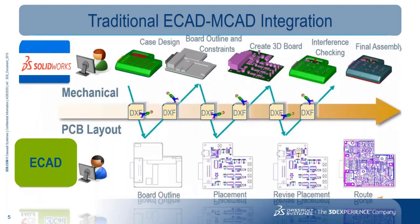Traditionally, the electrical and mechanical integration is done like this: you can see SOLIDWORKS users on the mechanical side and electrical CAD users using tools like SOLIDWORKS PCB, Altium, or other CAD systems. The design starts from the case design done by the mechanical engineer, exchanged with the electrical CAD designer as a board outline — typically as a DXF, STEP, or DWG file. The board outline and constraints are defined mechanically, then reverted back to the electrical CAD designer for component placement, and then back to mechanical to create the 3D board.